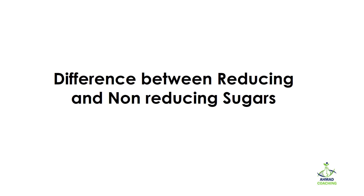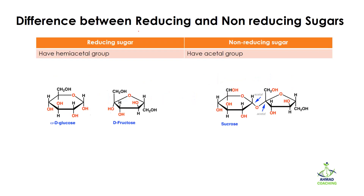Welcome to Amat Coaching. I'm your teacher Dr. Anam, and today we are going to study the difference between reducing sugars and non-reducing sugars. Reducing sugars have a hemiacetal group, while non-reducing sugars have an acetal group — in other words, they do not have hemiacetal groups.